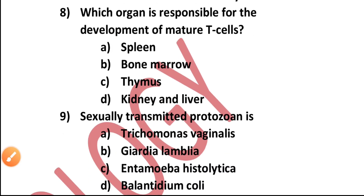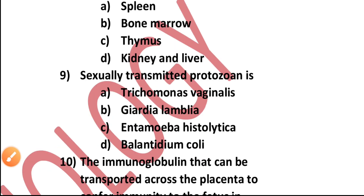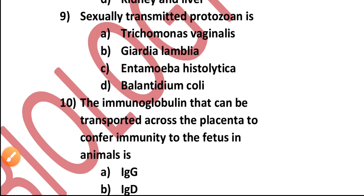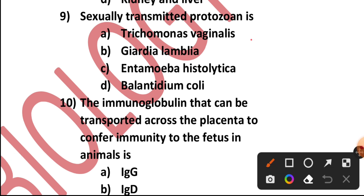Question number eight: Which organ is responsible for the development of mature T cells — spleen, bone marrow, thymus, or kidney and liver? It is the thymus. Option C. Question number nine: The sexually transmitted protozoan is — Trichomonas vaginalis, Giardia lamblia, Entamoeba histolytica, or Balantidium coli? It is Trichomonas vaginalis.